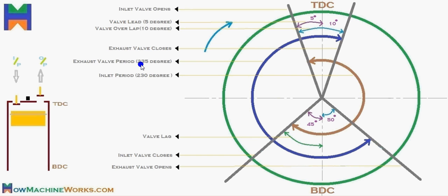So the exhaust valve period is 50 plus 180 plus 5, giving 235 degrees. To summarize: the inlet period is 230 degrees (the brown line), the exhaust period is 235 degrees (the blue line), with a valve lead of 5 degrees and lag of 45 degrees for the inlet, and a valve lead of 50 degrees and lag of 5 degrees for the exhaust.